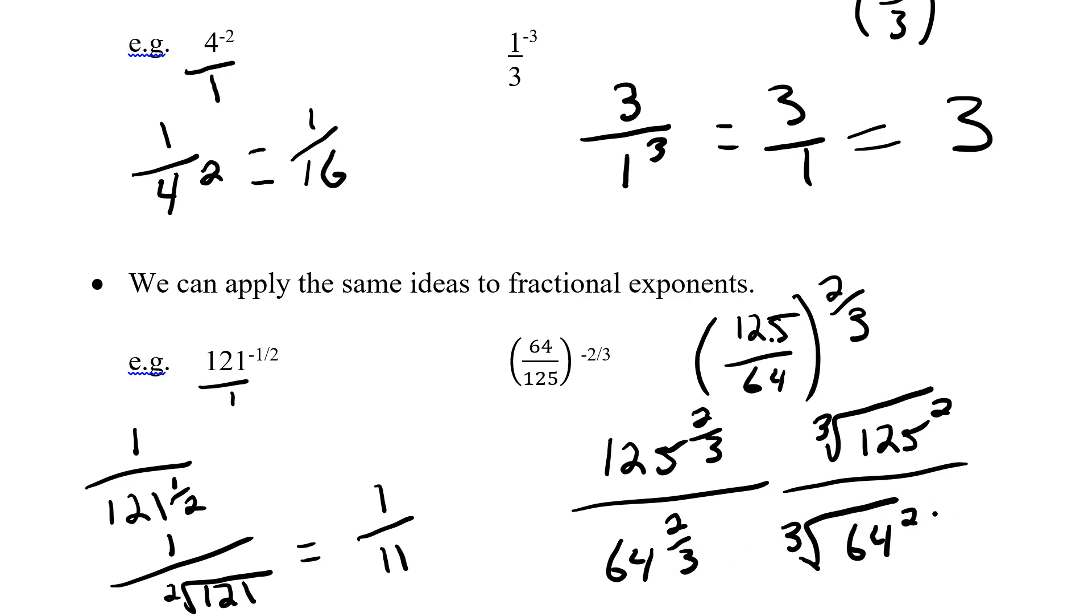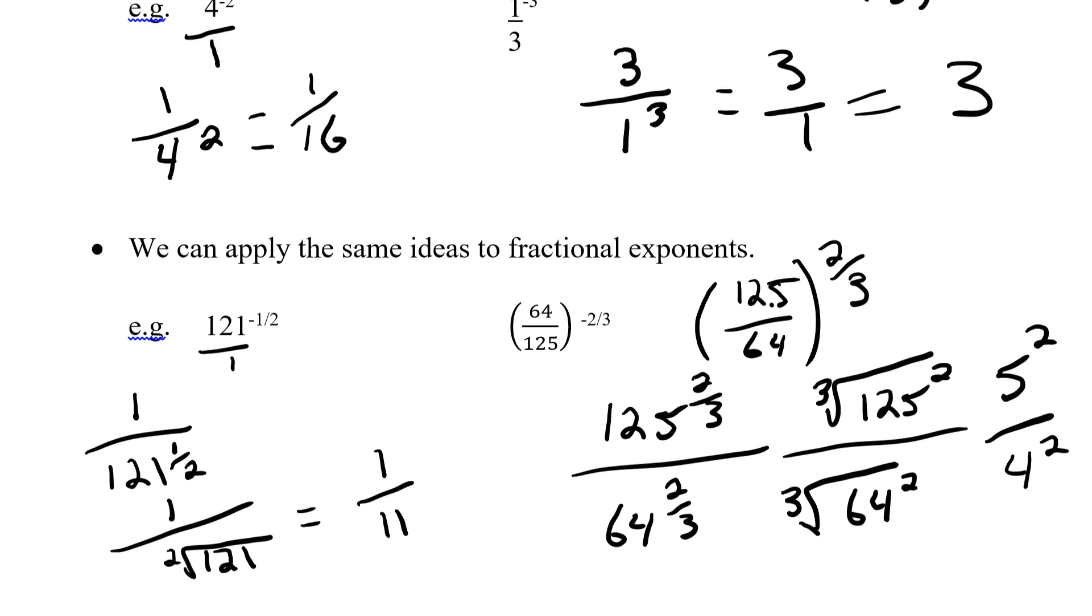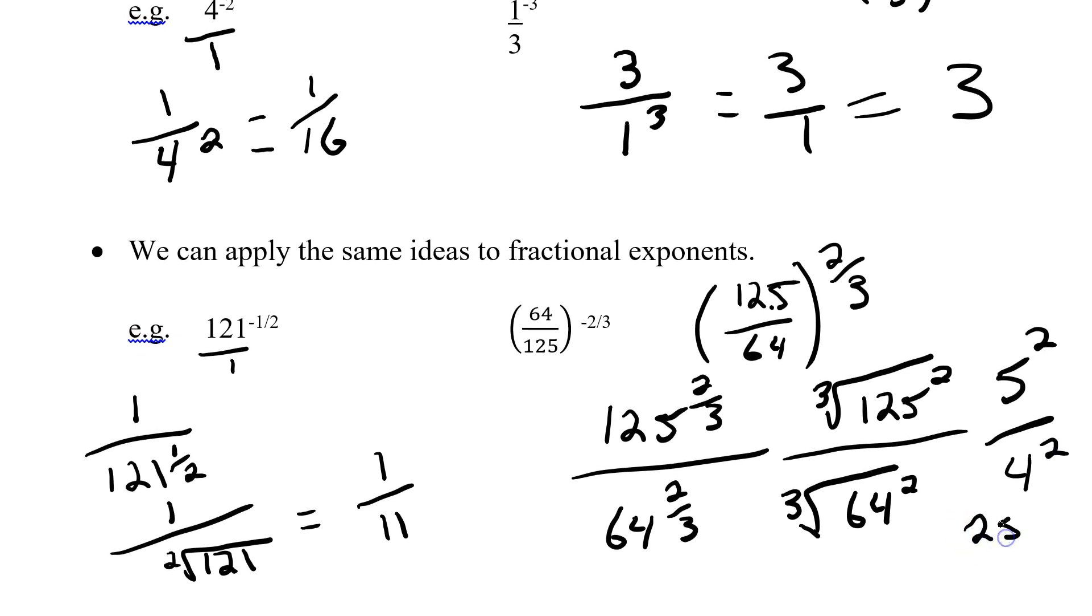Now we have some options. Do I want to do the cube root first, or the squaring? I think cube root is a little bit easier. The cube root of 125 is going to be 5, which has to be squared. Divided by the cube root of 64, which is going to be 4. And then squared. And I can do the final simplification here. I can take 5 squared and get 25. And I can get 4 squared to get 16.